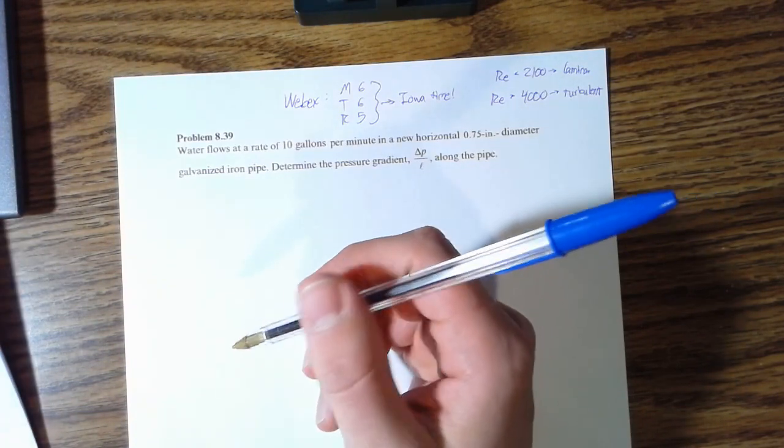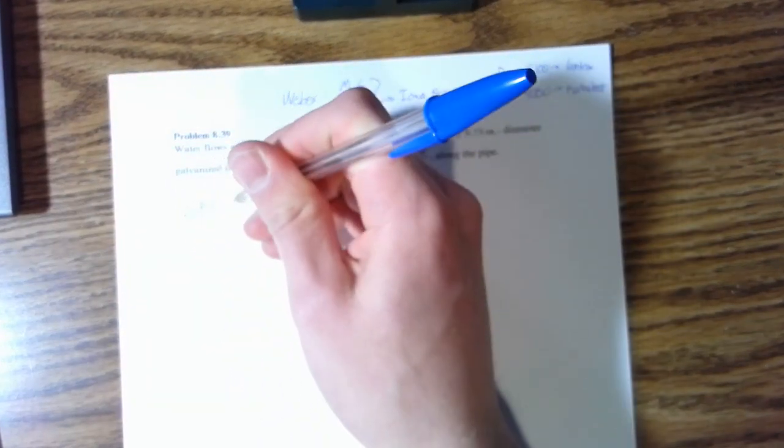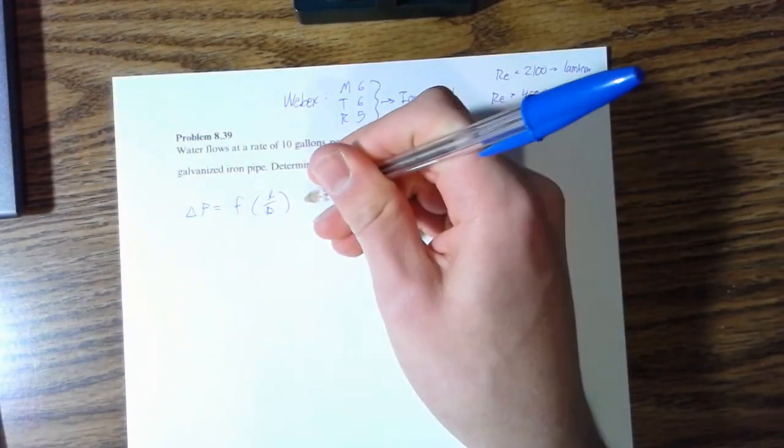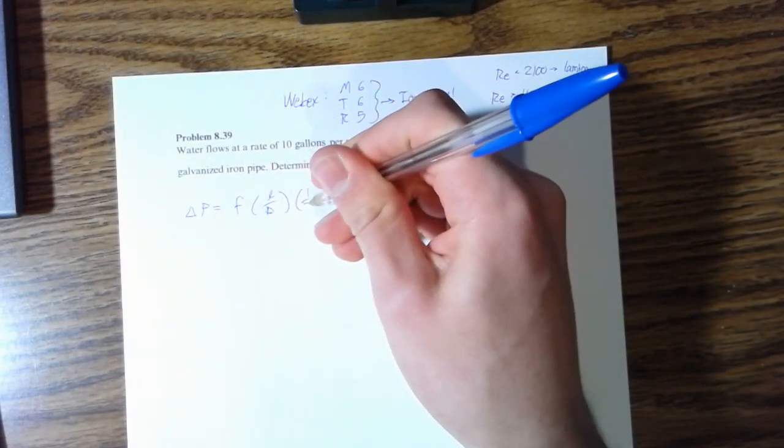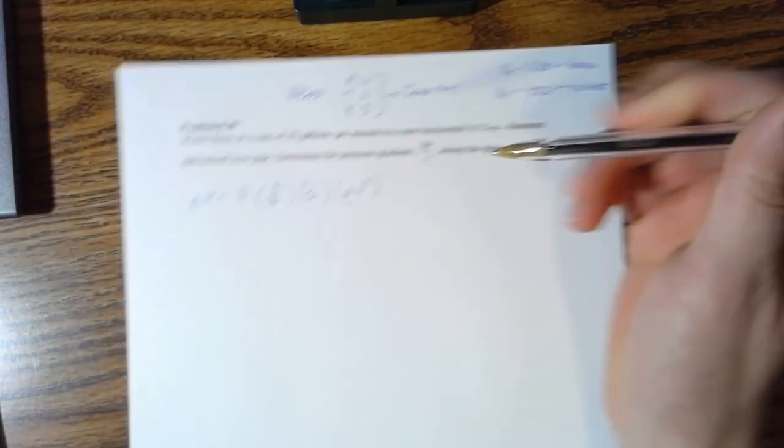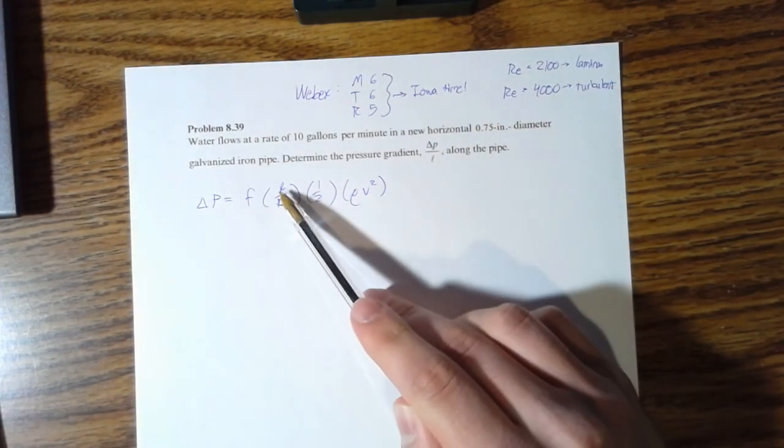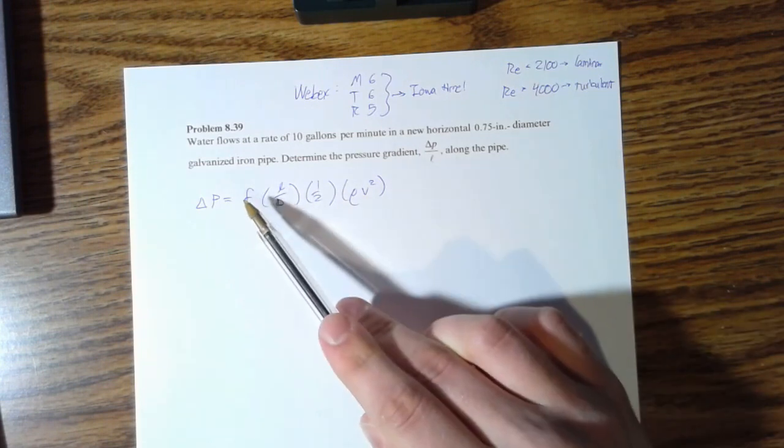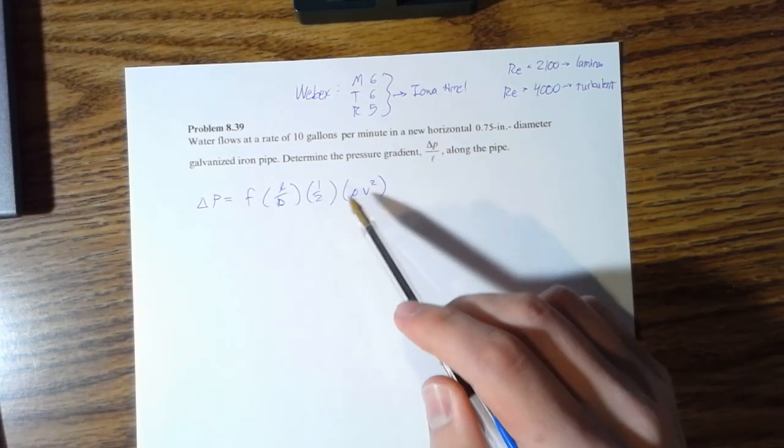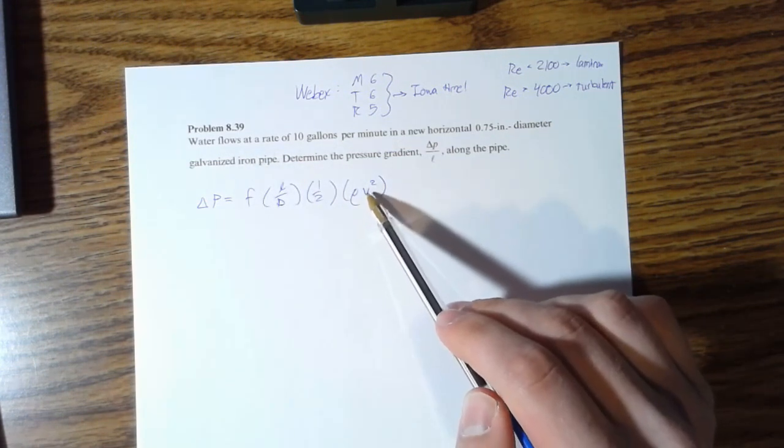What we're looking at is, in a horizontal pipe, change in pressure is the friction f times L over D times one half rho V squared. So we know the diameter, the length is going to stay a variable because we're going to solve for that, the friction we're going to have to determine based on whether it's laminar or turbulent flow, density we know is water so we can figure that, and then we'll need velocity.